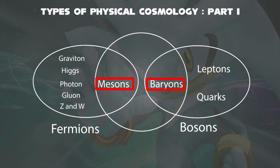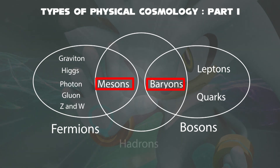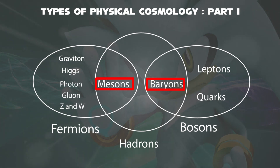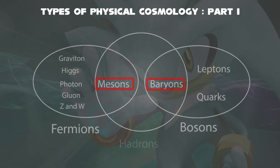If we find out the composite particles of fermions and bosons, then we get the third one, called hadrons. This general classification includes mesons and baryons but specifically excludes leptons.